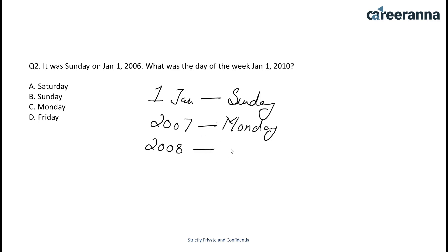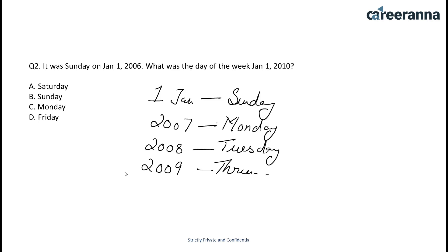If we talk about 2008, it is going to be a leap year, but we are taking January so it is going to be Tuesday. In 2009, because 2008 was a leap year, we will take after two days — that is Thursday. So 1st January 2009 is Thursday. In 2010 it is going to be Friday. So the correct option is option D.